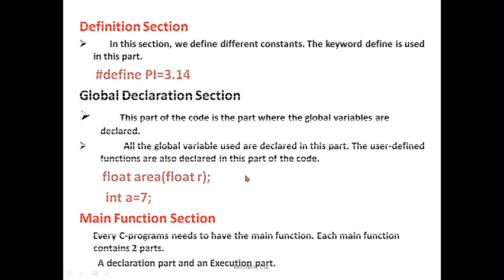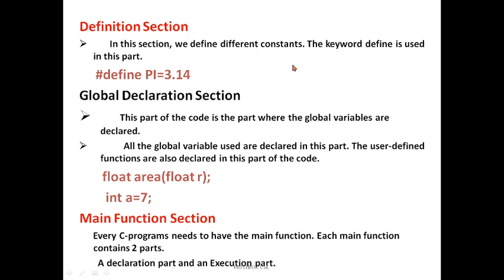The definition section is where you define different constants. The keyword #define is used in this part — it is also not mandatory. For example, if you want to find the area of a circle, you can define: #define PI 3.14, and like that. Or you can write #define A 20, meaning whenever you call the value A, the value is 20 only.